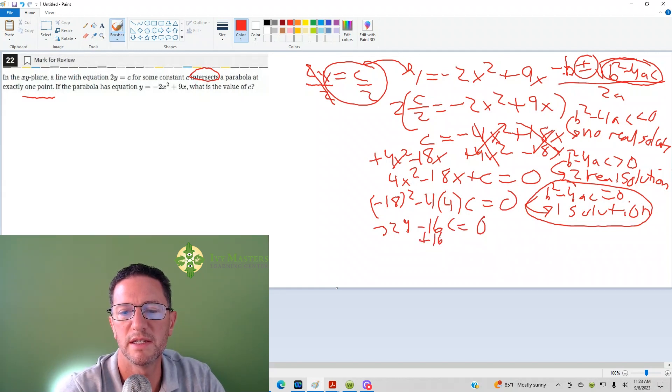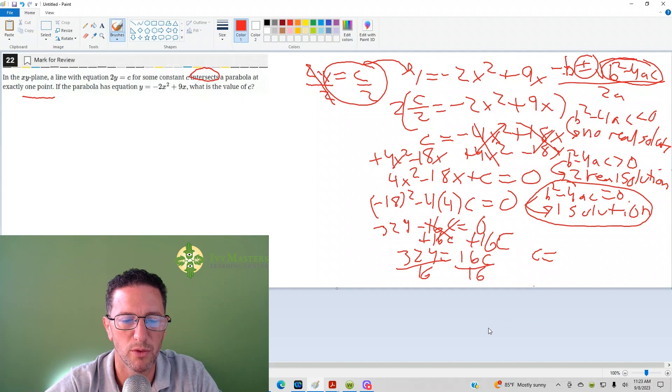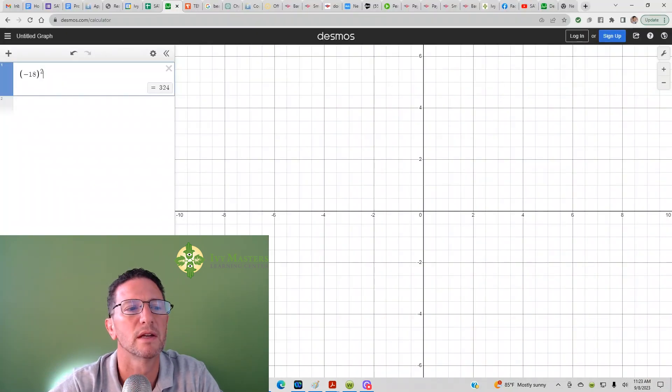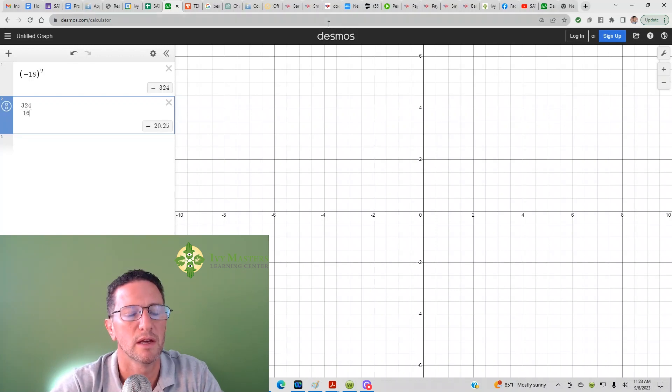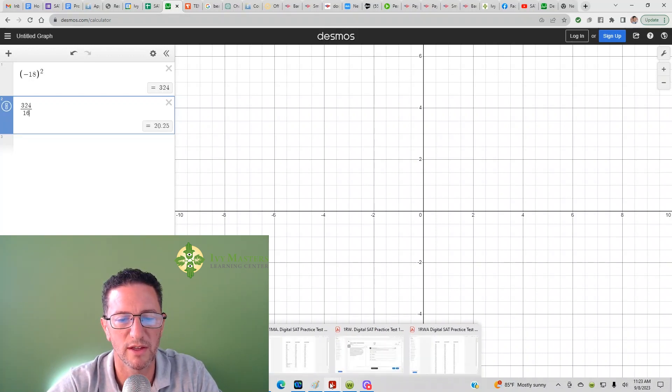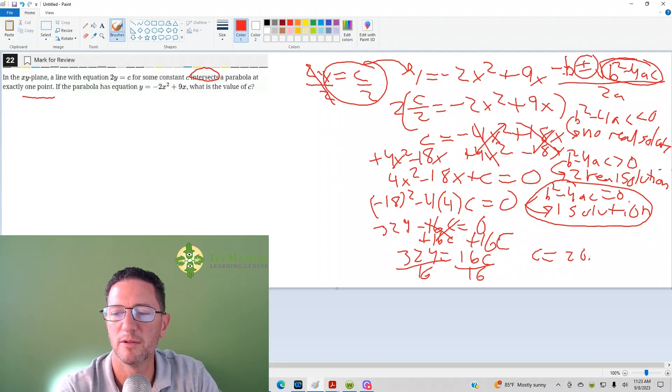We have 324 minus 16C equals 0. Then add 16C to both sides. 324 equals 16C. Divide both sides by 16 in order to solve for C. C equals, using our Desmos, 324 divided by 16, we've got 20.25. And that's exactly what you want to bubble in. You have 5 spots of bubble. Bubble in your 20.25, and you are finished.